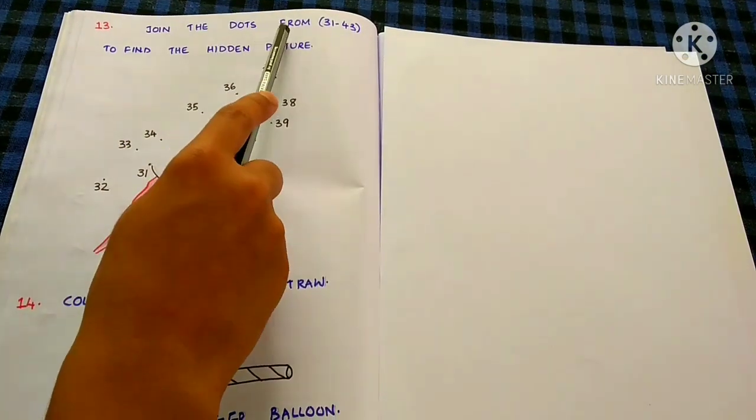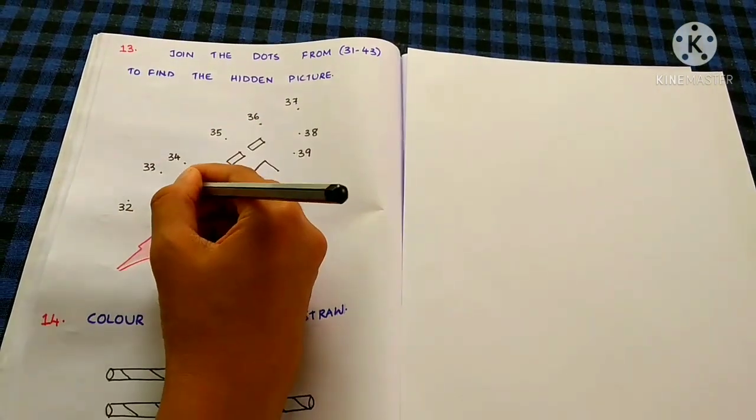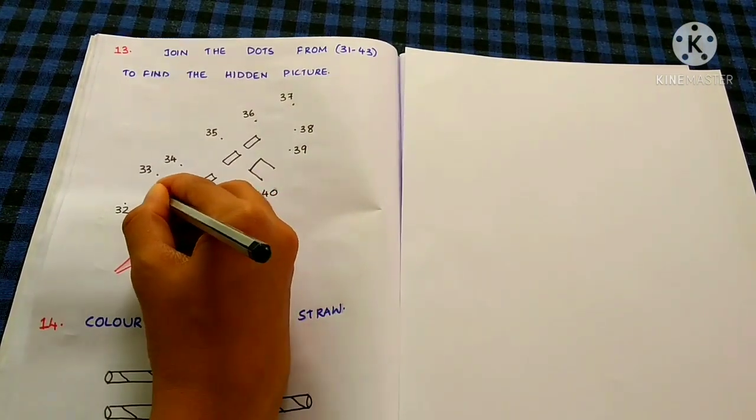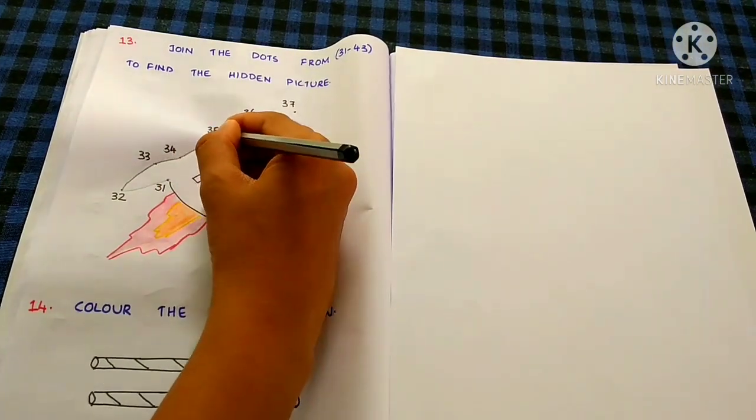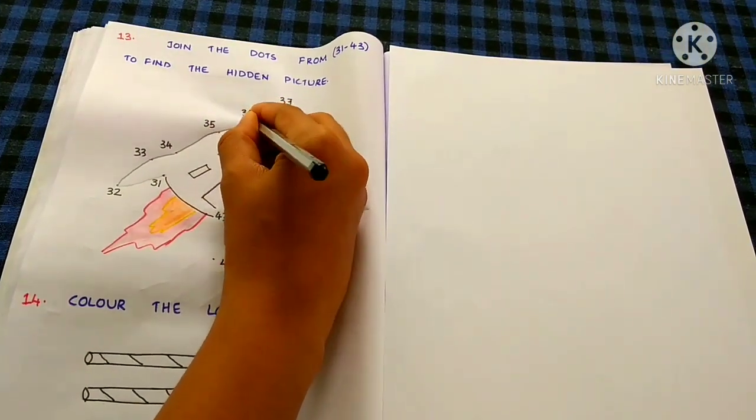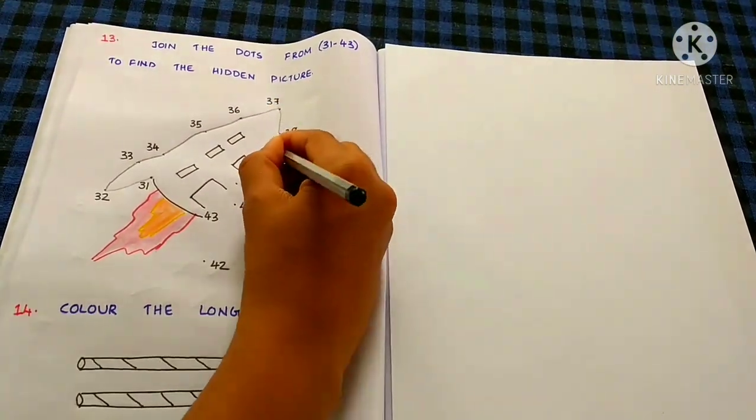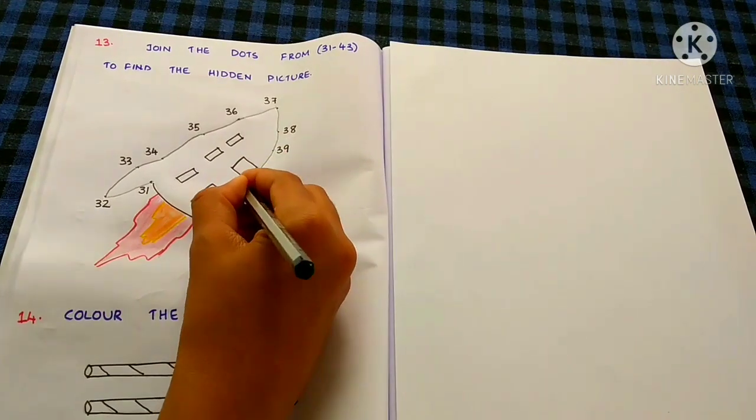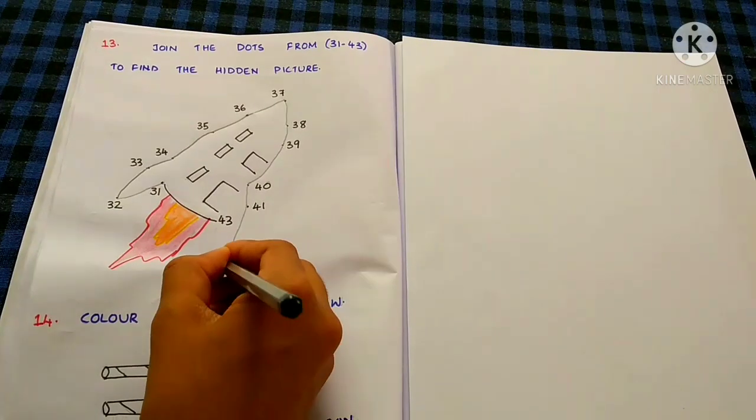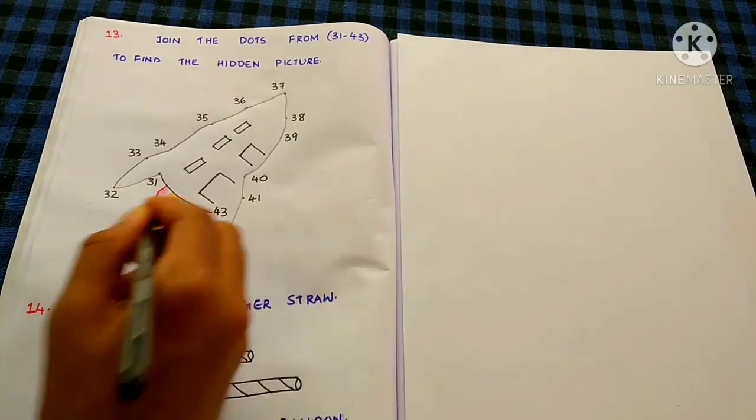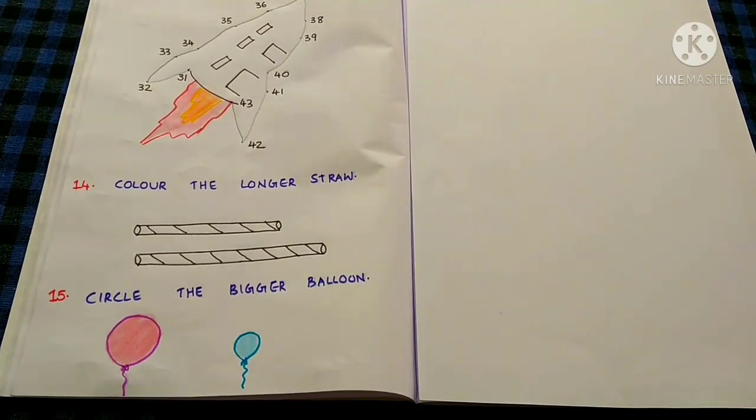Join the dots from 31 to 43 to find the hidden picture. 1, 2, 3, 4, 5, 6, 7, 8, 9, 10. 1, 2, 3, 4, 5, 6, 7, 8, 9, 10.